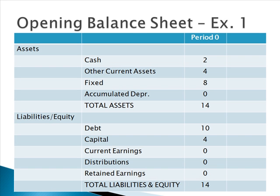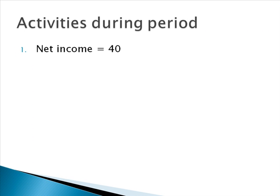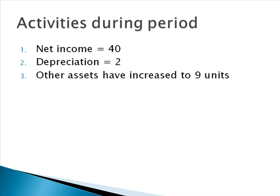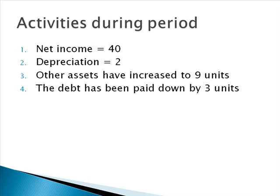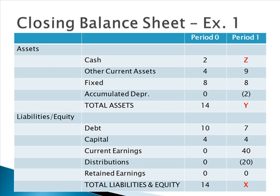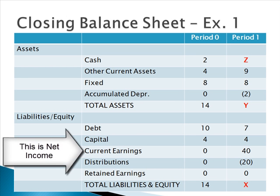Let's look at some activity that has occurred. In this case, we have net income of 40, coming from the income statement. We also have depreciation occurring of 2. Other assets have increased to 9 units. And lastly, the debt has been paid down by 3 units. Taking those numbers and plugging them into our balance sheet, we've made a few changes for period 1. What we do not know are the values of X, Y, and Z.